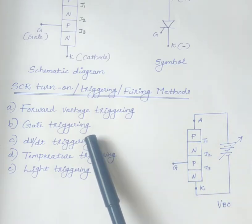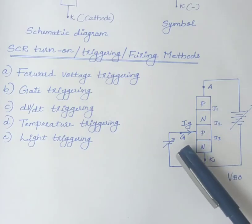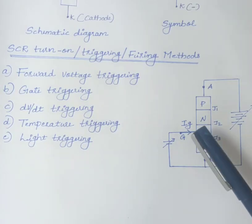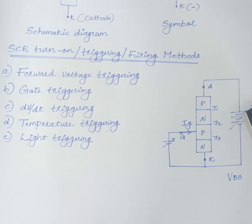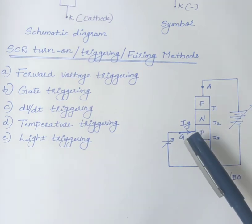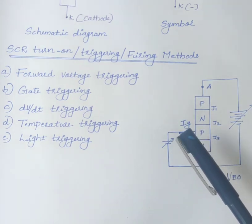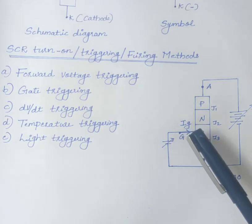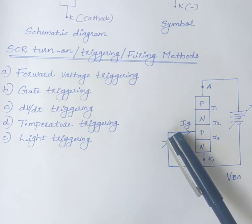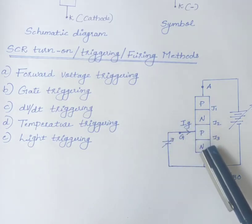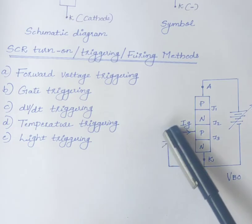Next one is gate triggering. This is the most common and efficient method to turn on the SCR. Here also, SCR is forward biased. Anode is connected to positive and cathode is connected to negative of the supply. And also, a positive gate voltage is applied between gate and cathode. This causes a positive gate current, IG, to flow through this channel.